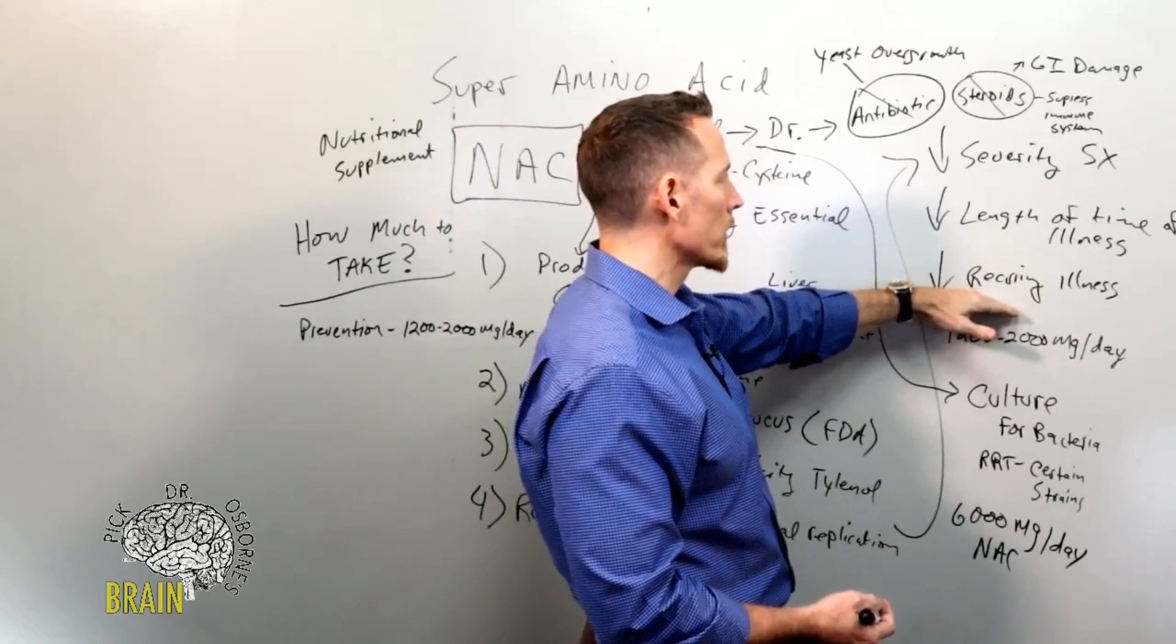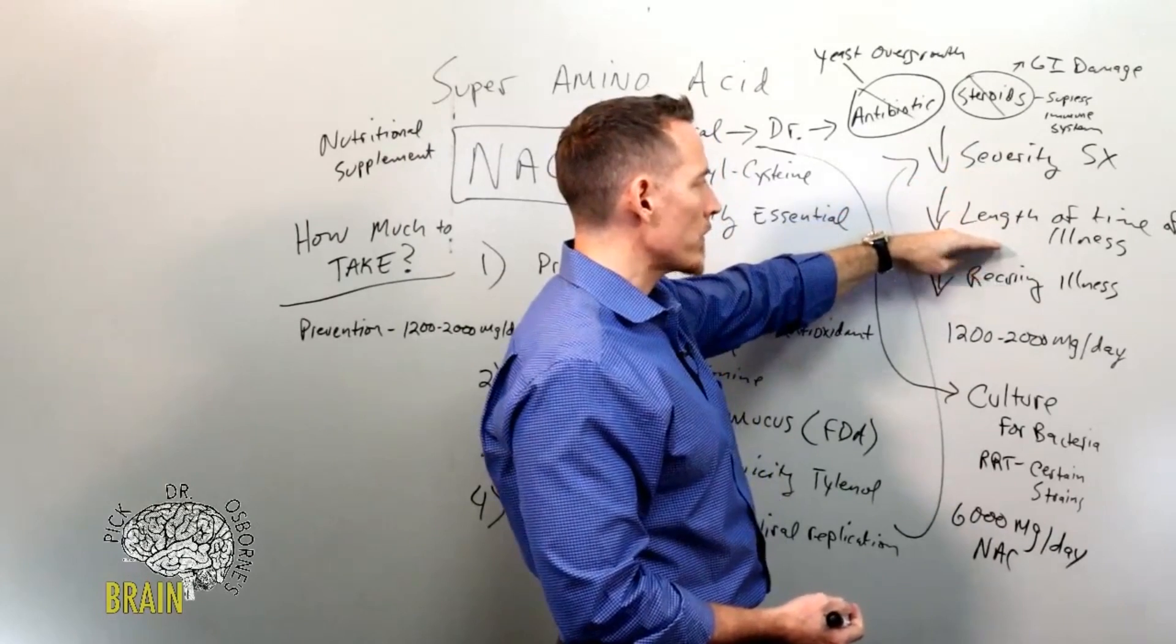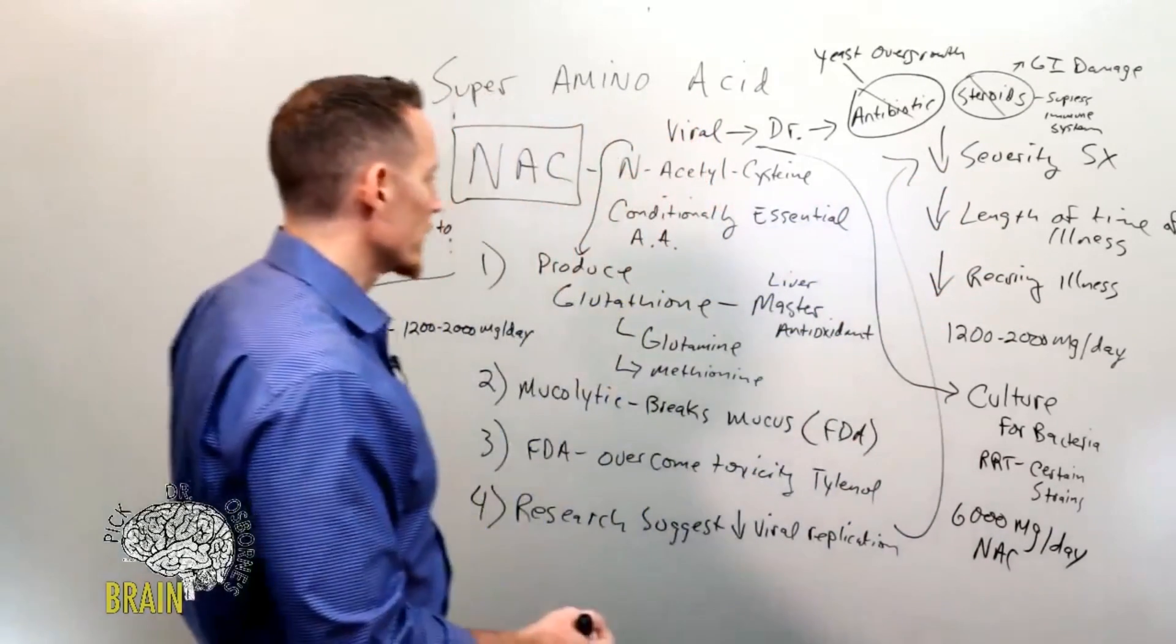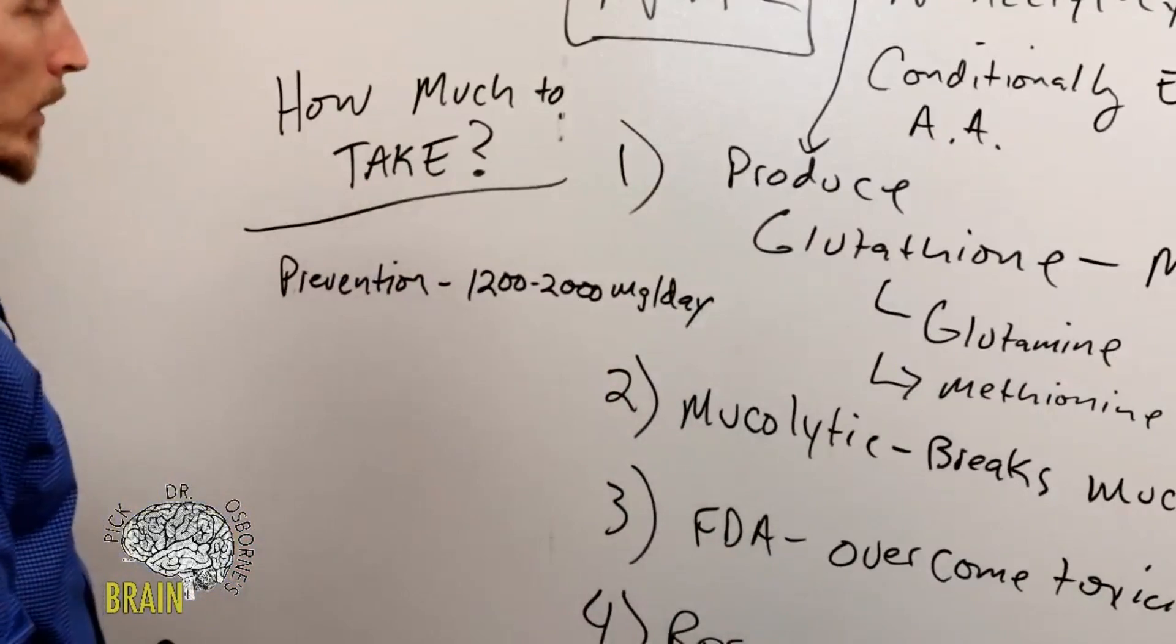That 1200 milligram a day mark showed reduced severity of symptoms, reduced length of time of illness, and reduction in the recurrence of illness. So 1200 to 2000 milligrams a day, that's your preventative dose.